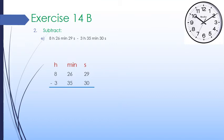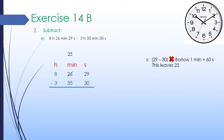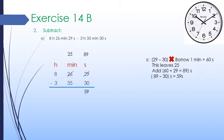We start subtraction from the second column. We have to subtract 30 seconds from 29 seconds, which is not possible. So we borrow 1 minute from the minute column, leaving 25 minutes in the minute column. Since 1 minute equals 60 seconds, we add 60 seconds and 29 seconds to get 89 seconds. We subtract 30 seconds from 89 seconds to get 59 seconds, which we write under the second column.